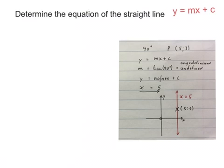We know that if a line is parallel to the y-axis or perpendicular to the x-axis, the inclination is 90 degrees and the gradient is undefined. So it has to be x equals 5. Please stop the video and try and get your head around this.